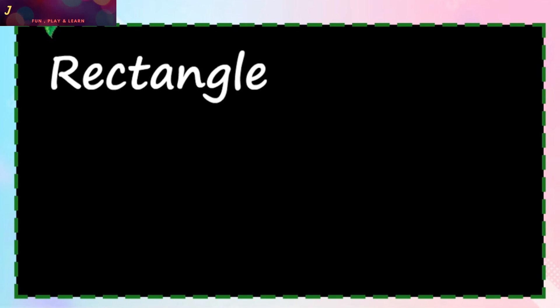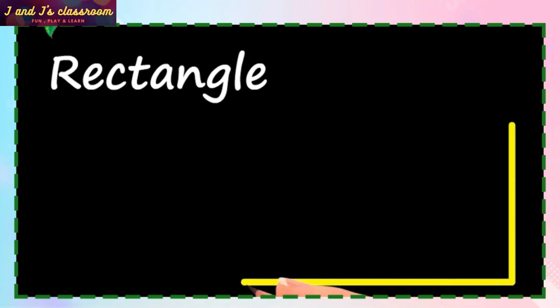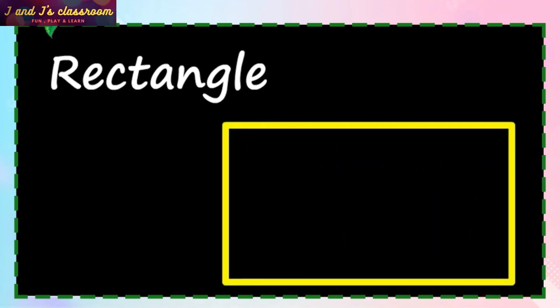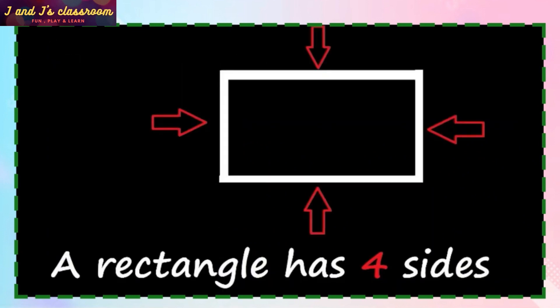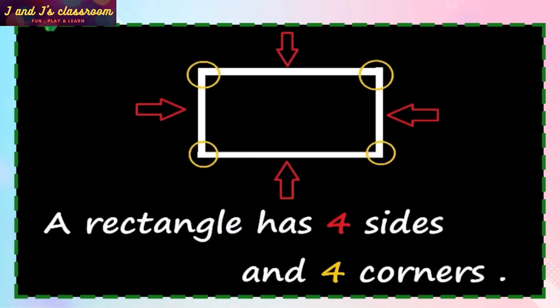Rectangle. 1, 2, 3, 4. Draw 4 straight lines. A rectangle has 4 sides and 4 corners.